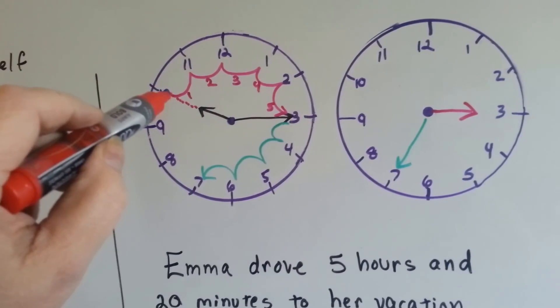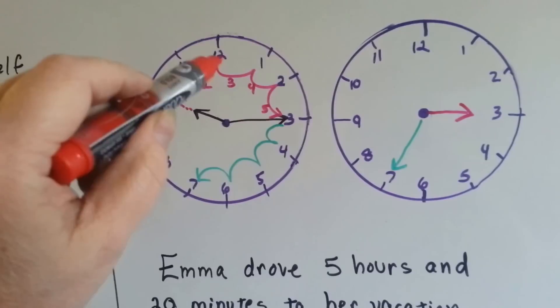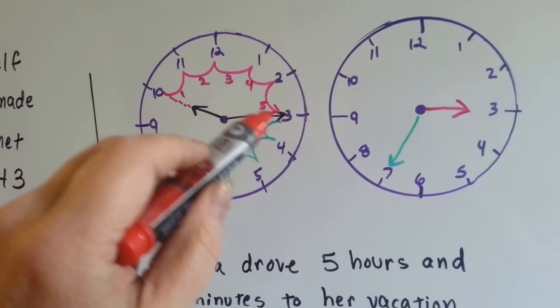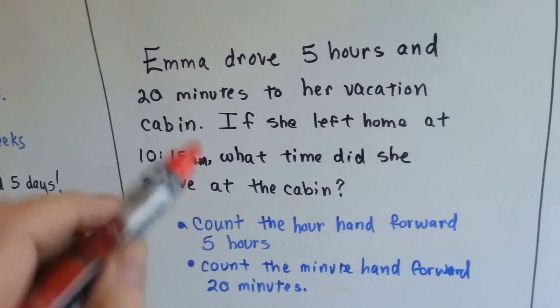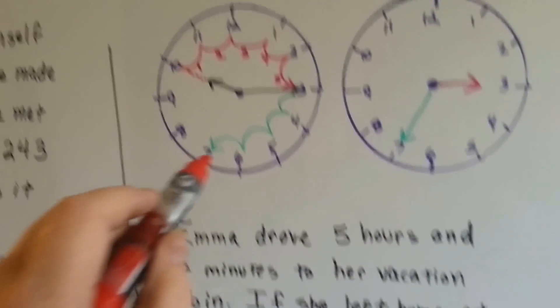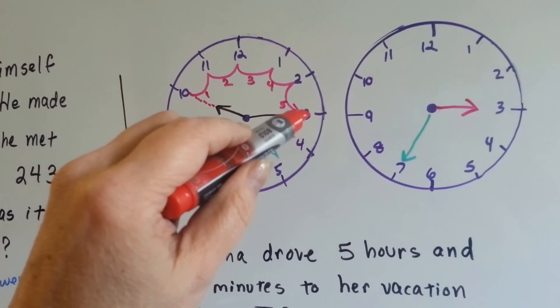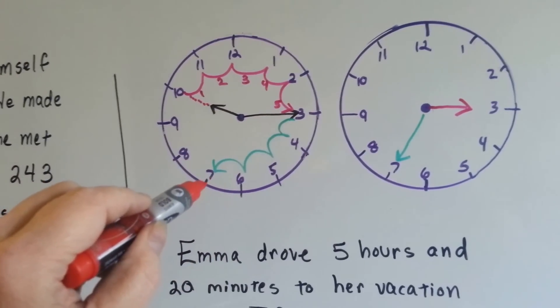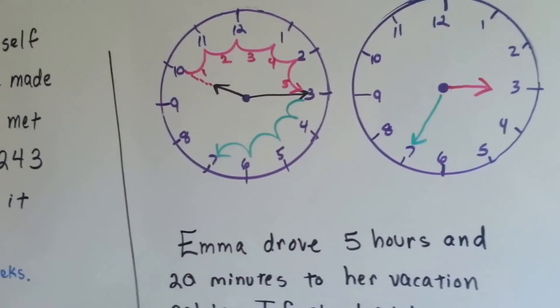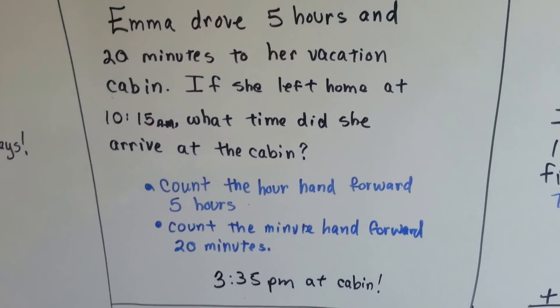Here's the hour hand, and it was 10:15, so the hour hand's on the 10. So I'm going to go five hours: one, two, three, four, five. So now we know the hour hand's new place is pointing to the three, and we need to count the 20 minutes for the minute hand. Well, the minute hand was on the three, and we know in between each number is five minutes. So we're going to go five, 10, 15, 20. That puts the minute hand on the seven. We draw that there, and we see that it's 3:35. So we know she arrived at the cabin at 3:35. Wasn't that easy?